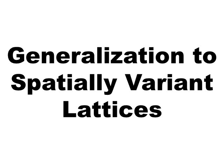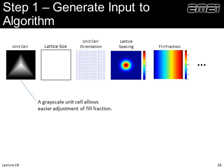Our next subject is generalizing what we've just learned to spatially vary lattices — more than just a single grating. I'll present the generalization step by step. The first step is generating all the input the algorithm needs: a description of the unit cell, the size of the lattice (maybe 20 by 20 unit cells), the orientation of the unit cells as a function of position, the lattice spacing as a function of position, the fill fraction as a function of position, and maybe other things we want to spatially vary.